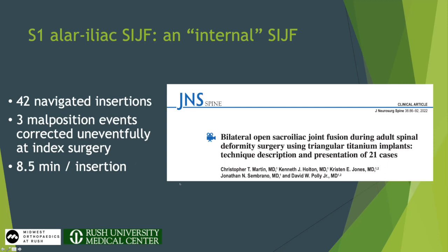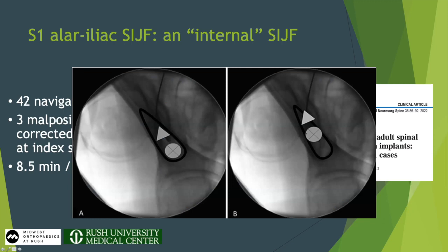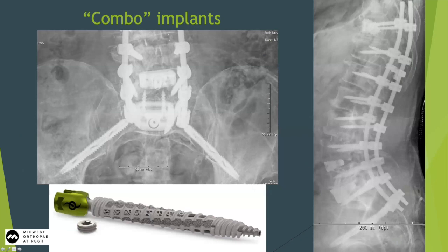There are combination implants from a couple of companies — a coring, 3D-printed device with a tulip head. This might cause some local fusion, but one point of fixation probably doesn't cause a robust SI joint fusion. Now, I want to talk about what we know and don't know about the implications of actually achieving a fusion at the SI joint in deformity.